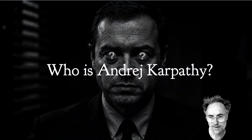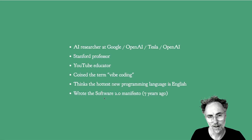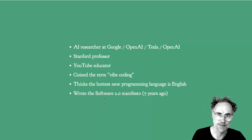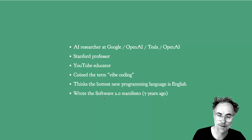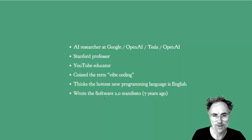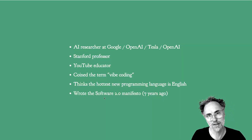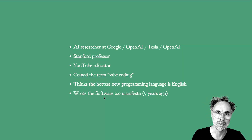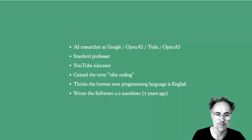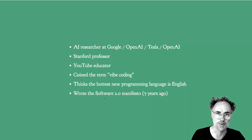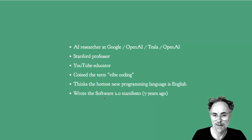But more importantly, who is Andrej Karpathy? Andre is an AI researcher who's worked at some really big companies like Google, OpenAI, and Tesla. But most importantly to me, he is a YouTube educator who makes some really high quality, extremely accessible videos about the underlying technology behind machine learning and AI. You may know him because he coined the term vibe coding, which has become extremely popular lately. And I share his hot take that the hottest new programming language is English, or natural language.